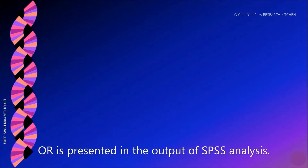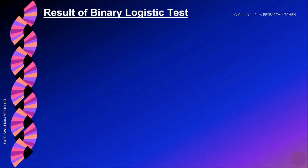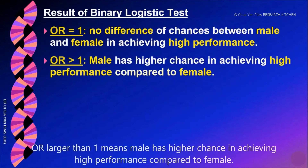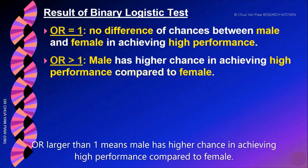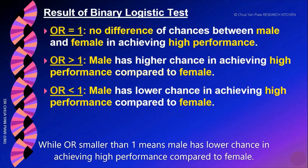OR is presented in the output of SPSS analysis. An OR value equal to 1 means no difference in chances between male and female in achieving high performance. OR larger than 1 means male has a higher chance in achieving high performance compared to female. OR smaller than 1 means male has a lower chance in achieving high performance compared to female.